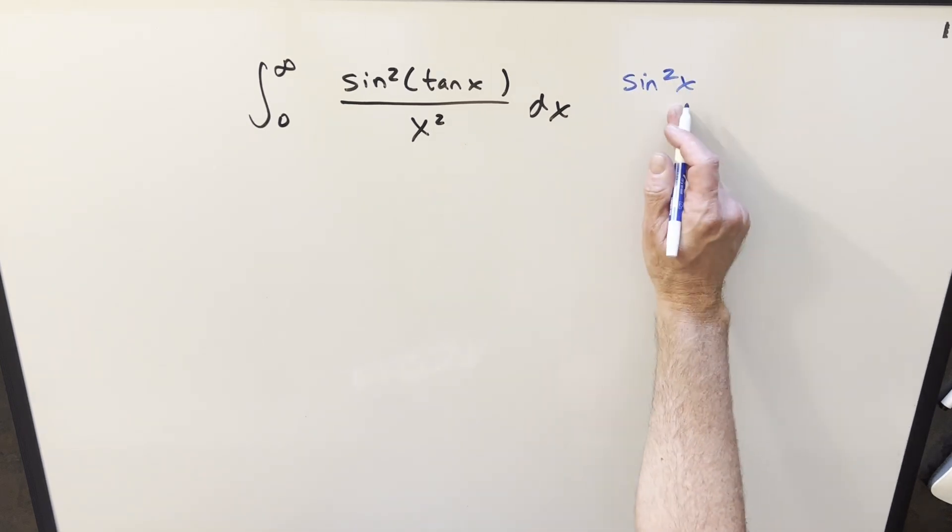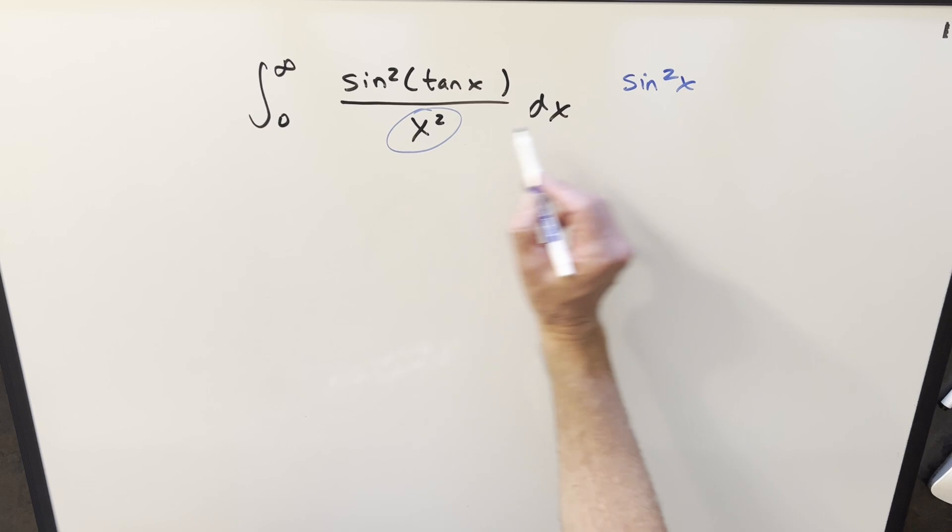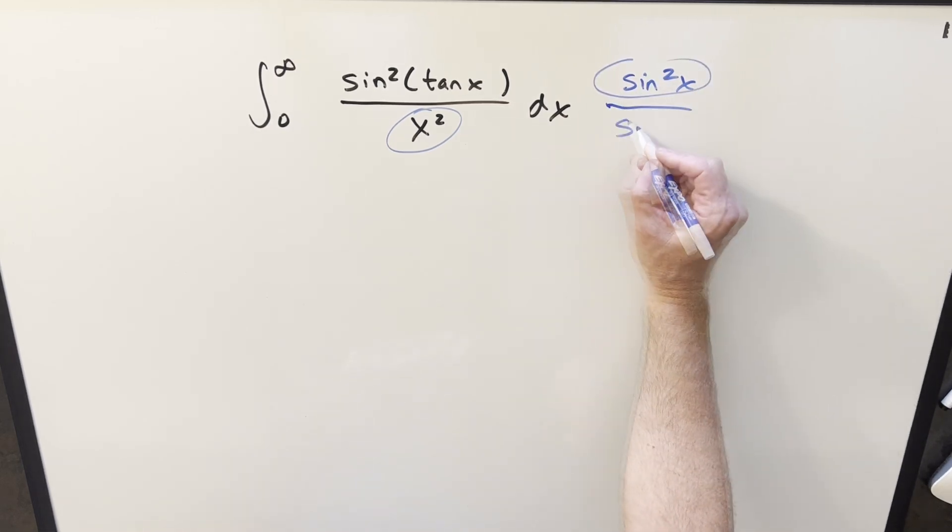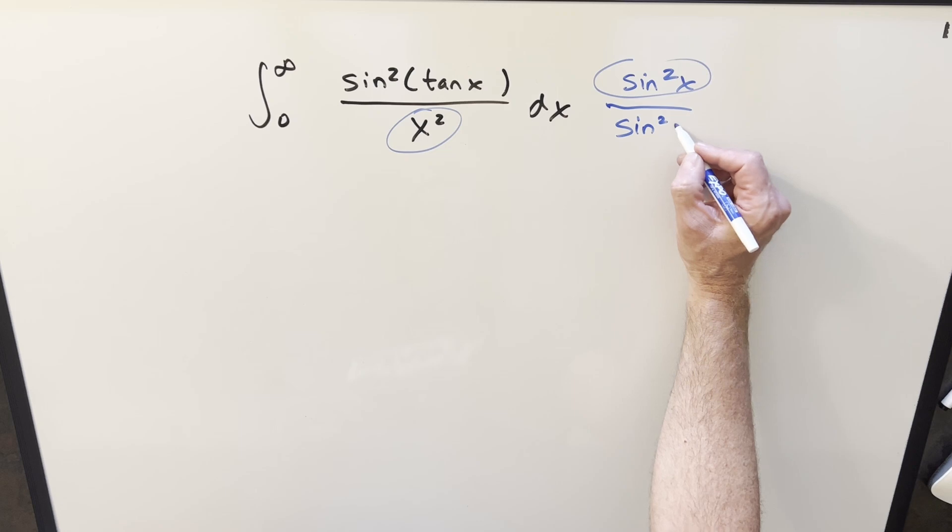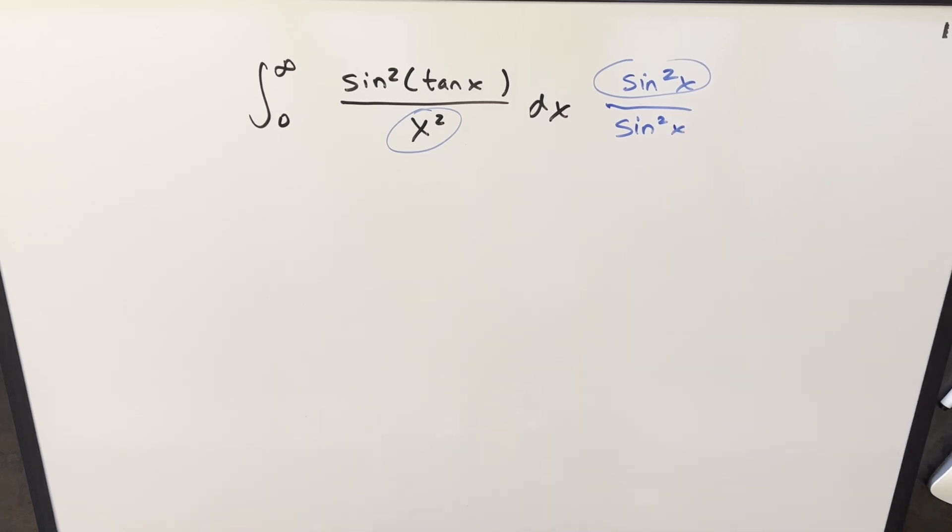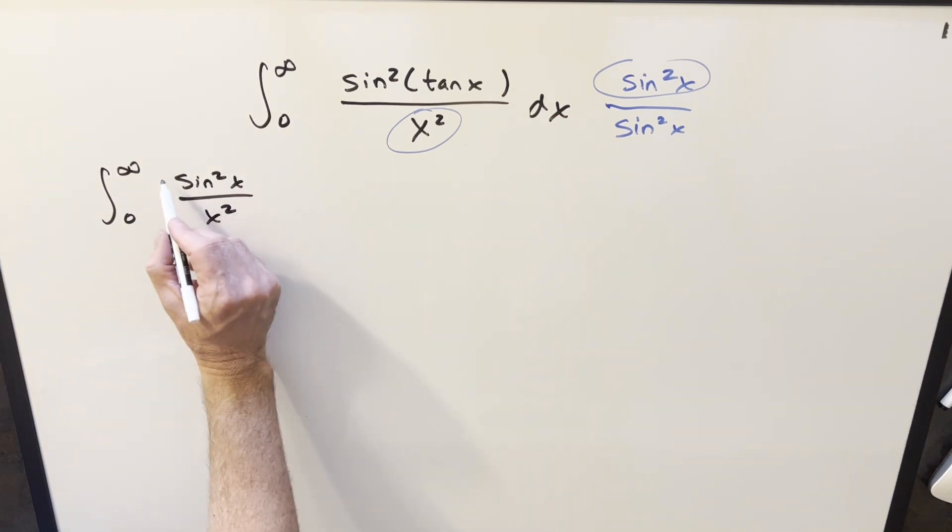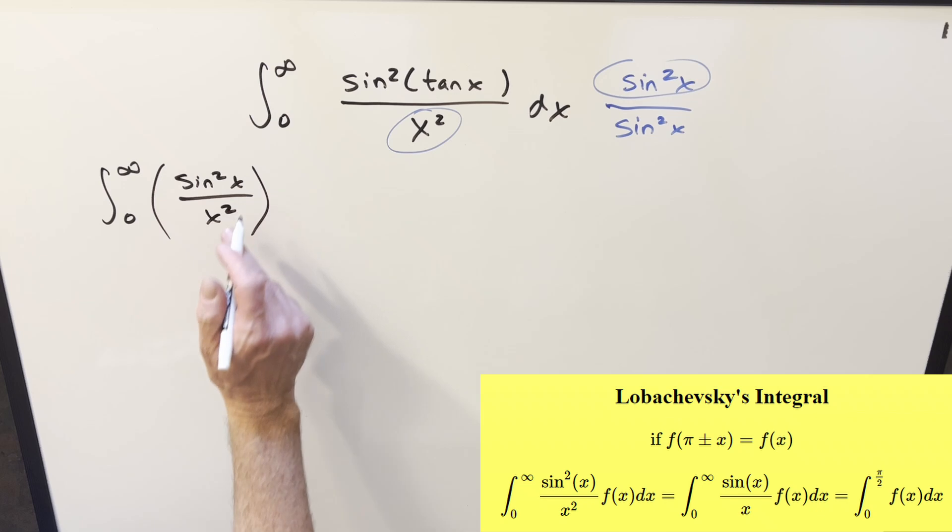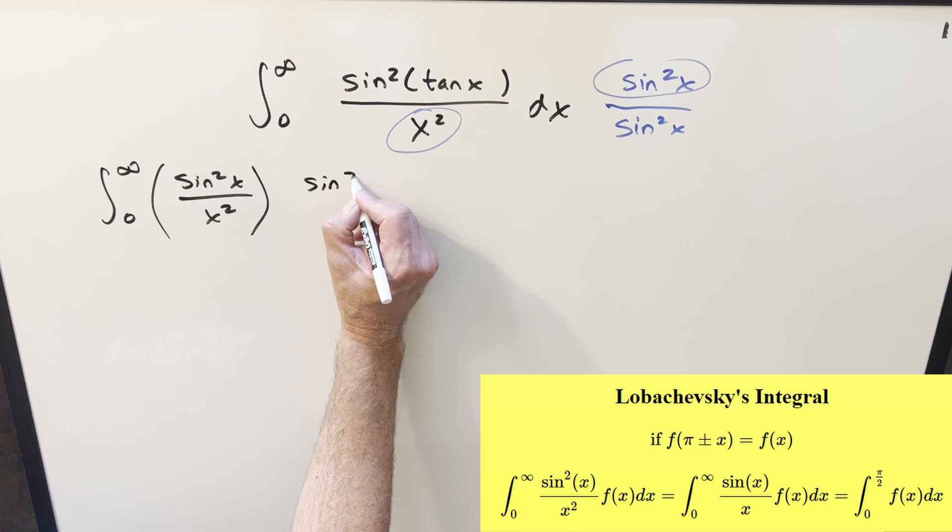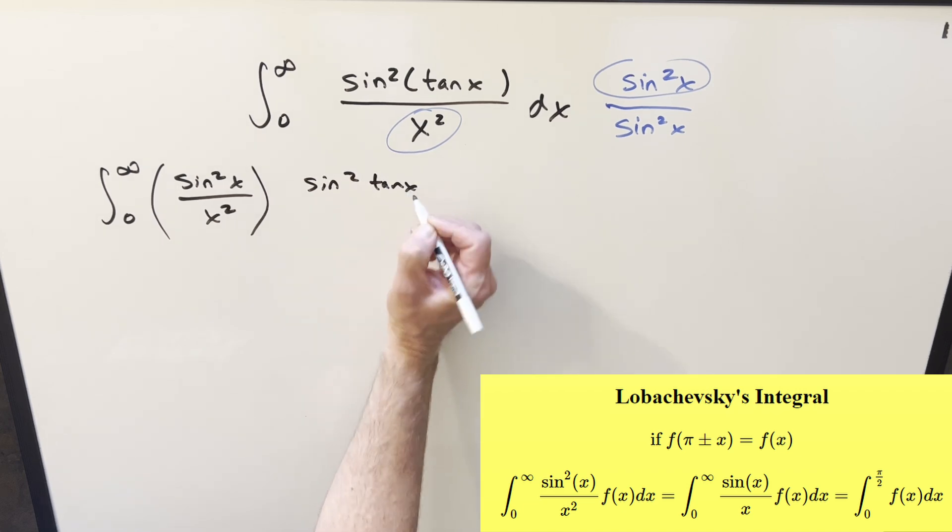If I multiply in sine squared x, now we have what we need here and here, but I don't want to change it. So we'll multiply by one, just multiplying in sine squared x in the denominator. Let's rearrange this to make it clear. So we have our sine squared x over x squared. Keep in mind the formula works with sine squared over x squared. So we have that here and then we'll have all the other stuff. We're going to have sine squared tan x over sine squared.